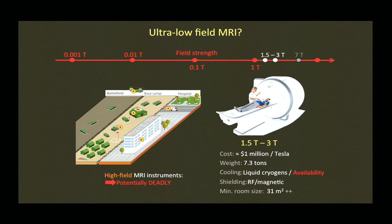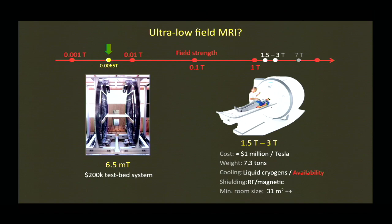If you'd like to do imaging in a forward field situation — a military battlefield or areas outside the radiology suite — high-field scanners, whether electromagnets, permanent magnets, or superconducting magnets, are dangerous. Some of my early work was funded by the DOD, who was interested in this type of work. That leads you immediately to understand the motivation for doing work at low field. We work at the other end of the spectrum: six and a half millitesla.